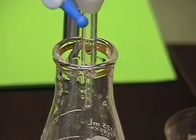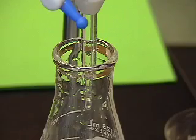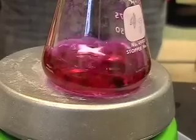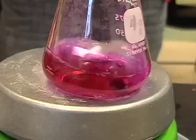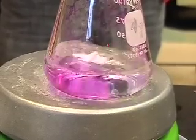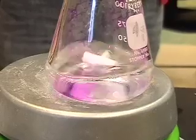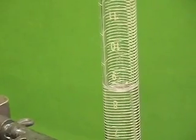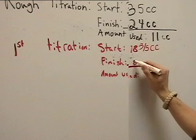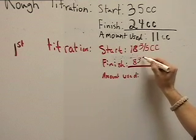Then, when it's close to neutralization, you do drip by drip into the flask to make sure that your results are as accurate as possible. And after a while, when the phenolphthalein turns clear, you know neutralization has occurred. Then check the burette to see how much acid is left and make sure that you record your results so that you can come back to them later.